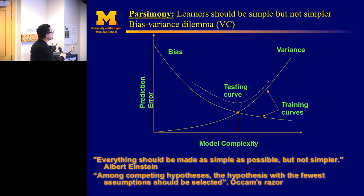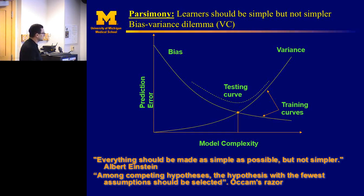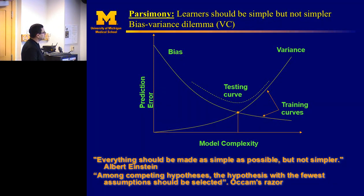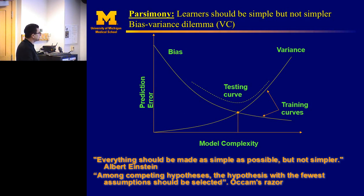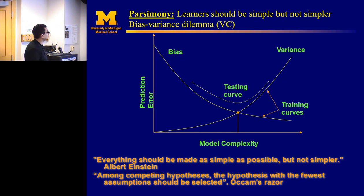Talking about the parsimony principle — learners should be simple, but not simpler, as Albert Einstein said, which is part of Occam's razor. When you build models, increasing the number of parameters increases model complexity, and you'll fit that model very well. But when you apply that model to unseen data — measuring variance — the more complex models will have less ability to fit the variance. We do training and testing to find the sweet spot between degree of complexity and the balance between bias and variance. One way to do it is using the VC dimension.